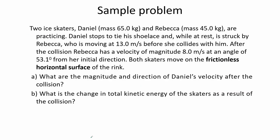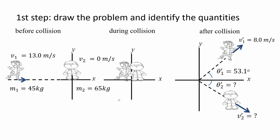In this example, ice skater Daniel (65 kg) is at rest when struck by Rebecca (45 kg) moving at 13 m/s. After collision, Rebecca has a velocity of 8 m/s at 53.1 degrees from her initial direction on a frictionless surface. For letter A, we find the magnitude and direction of Daniel's velocity after the collision. For letter B, we find the change in total kinetic energy. We note that after collision, Rebecca moves in the first quadrant and Daniel is assumed to move in the fourth quadrant, so his vertical component is negative.